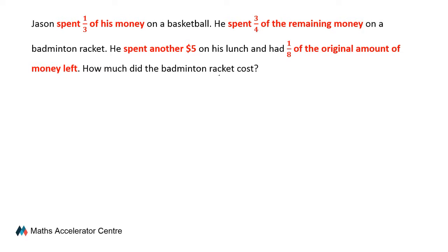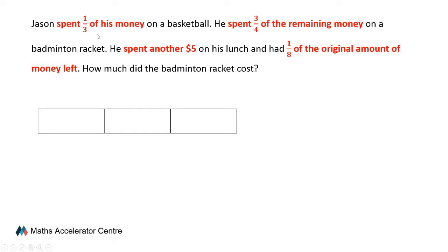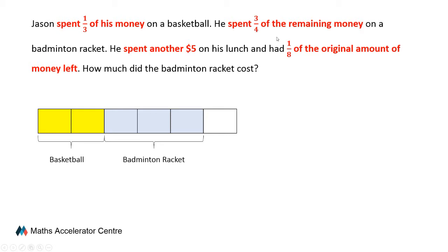After we highlight the keywords, step 2 is to transform the keywords into useful information like models. From the first set of keywords, we know that his entire sum of money can be divided into three big units, and he spent one-third of it on a basketball. Then the remaining money can be divided into four smaller units, so we divide these two big units into four smaller units. Since one big unit can be subdivided into two smaller units, the yellow unit can also be divided into two smaller units. We indicate that three of these remaining four units were spent on the badminton racket.